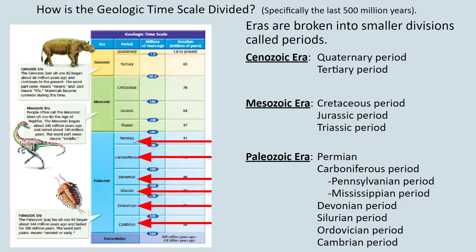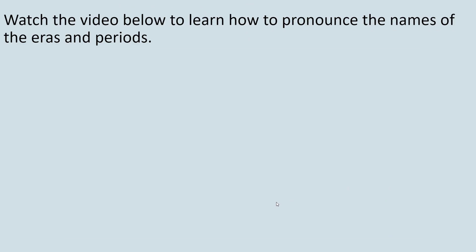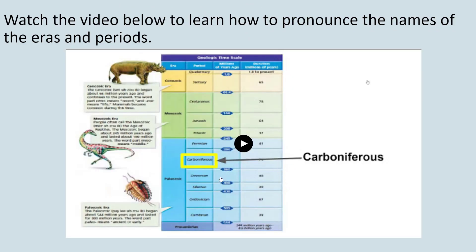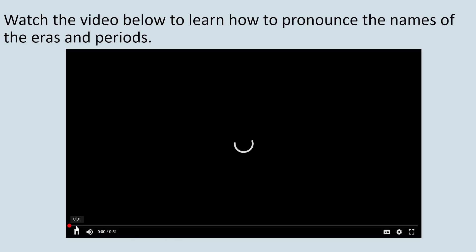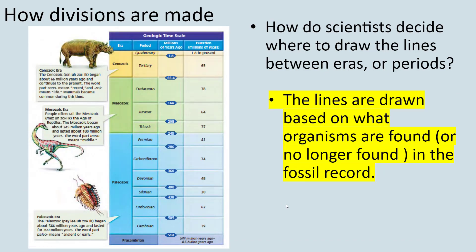You might be asking yourself: how do scientists decide where to draw these lines between eras and periods? There's a roughly 90-second video that tells you how to pronounce each of these eras and periods, so you can talk intelligently about the Cretaceous period or the Quaternary — you can watch it on your own time.